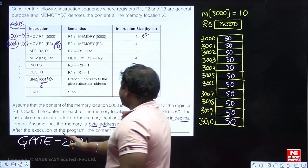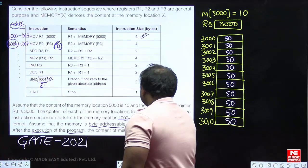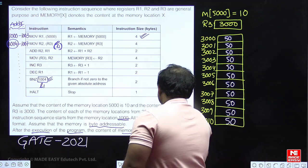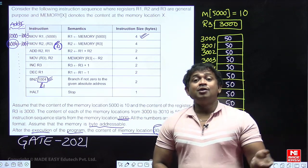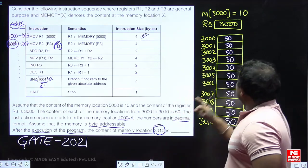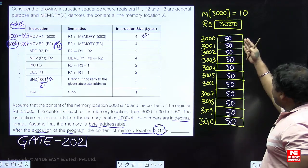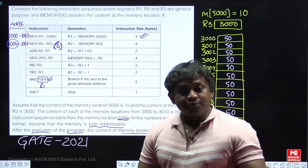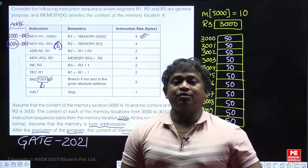After execution of the program, we need to find the content of memory location 3010. Initially, all locations from 3000 to 3010 contain 50. The question is: what is the content of memory location 3010 after program execution?